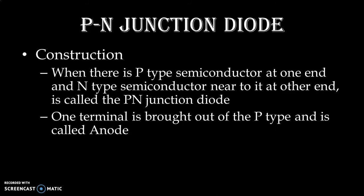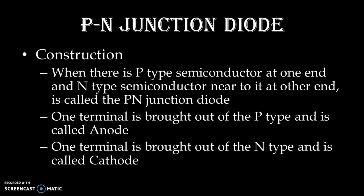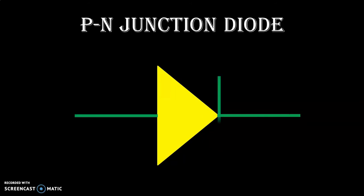The PN Junction Diode has two terminals. One terminal is brought out of the P type semiconductor and it is called the anode. Another terminal is known as cathode. This is the symbol for the PN Junction Diode.